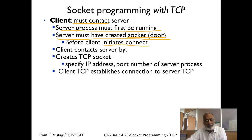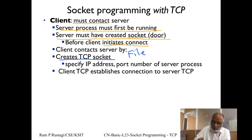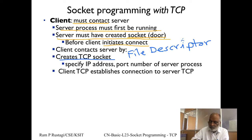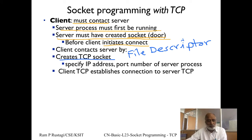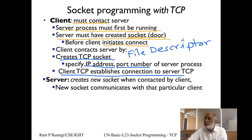Once the server is up and running and has created a socket, for a client to connect, the client must first create a TCP socket. As we said, a socket is like a file descriptor in Unix — everything works like a file; you do read, write, close. Once you create a socket you get an FD, and then you do a connect, specifying the IP address of the server and the port number on which the server process is listening.